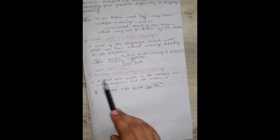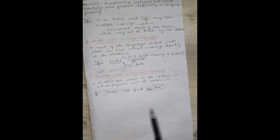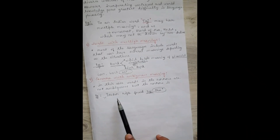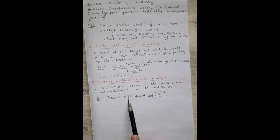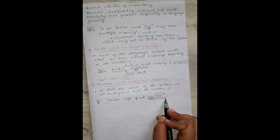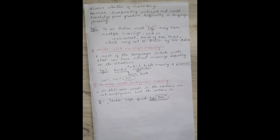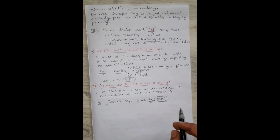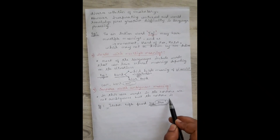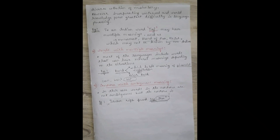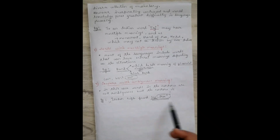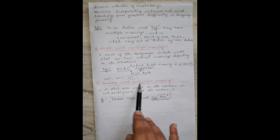The last challenge is sentences with ambiguous meaning. For example: 'Stolen rifle found by the tree.' The phrase 'by the tree' has multiple meanings — it could mean I found it near the tree, or that the tree helped me find it, or that some person near the tree found it. The sentence carries ambiguous meaning, making it difficult for machines to interpret correctly.